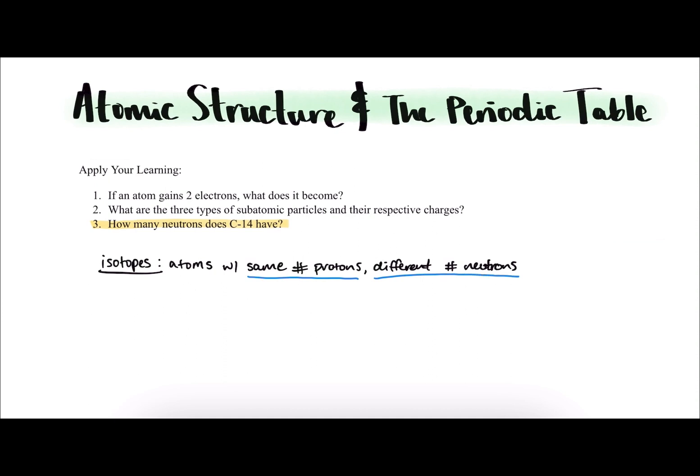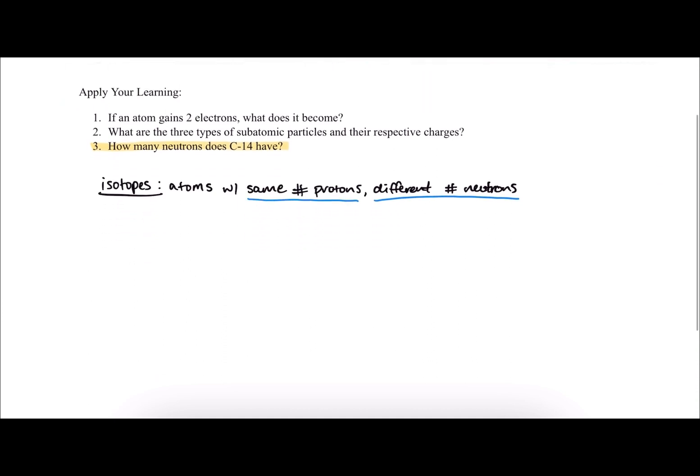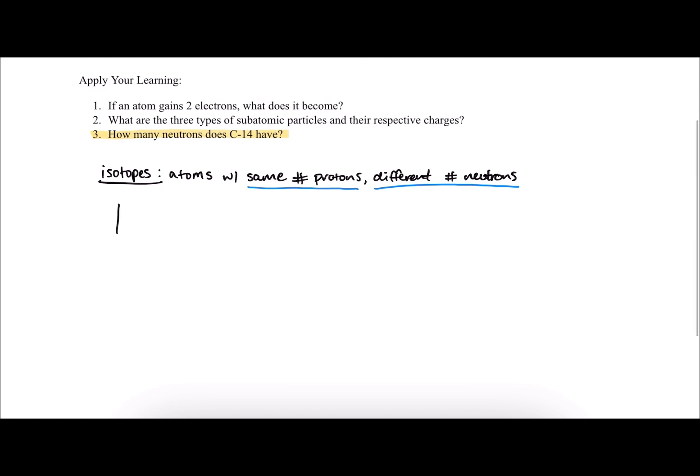There are two types of isotope notation that are commonly used. Firstly, we have nuclide notation, and we also have hyphen notation.